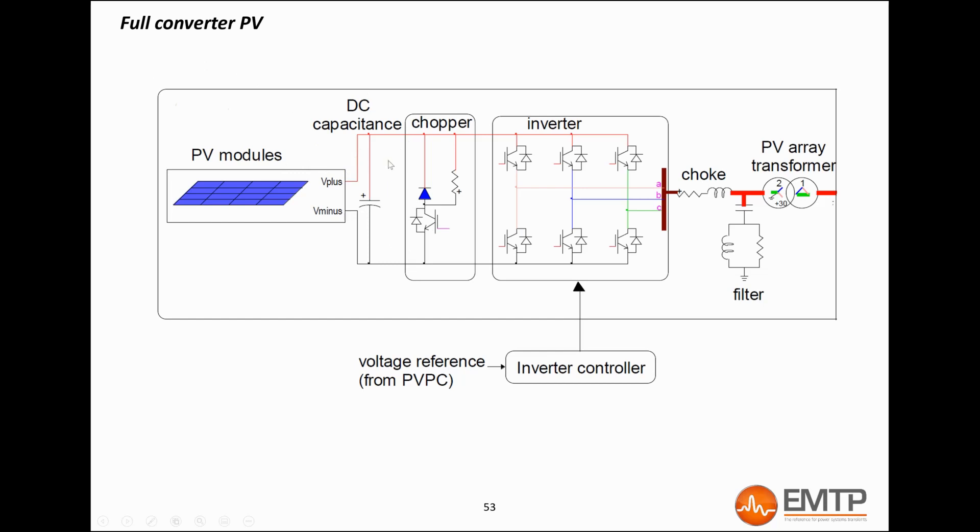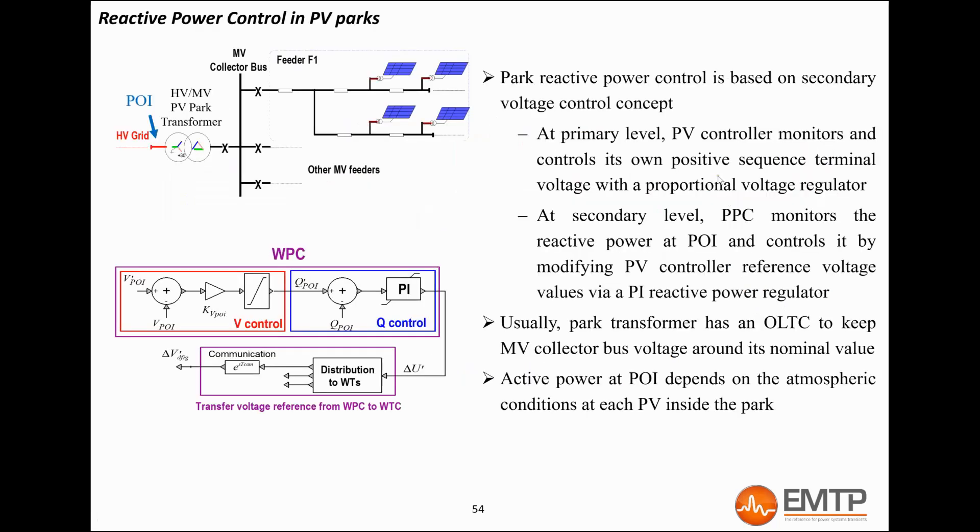More information on this topic will be provided in another video. A DC resistive chopper is used for the DC bus overvoltage protection. A line inductor called choke filter and an AC harmonic filter are used at the grid side converter to improve power quality.